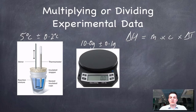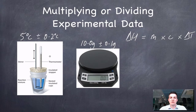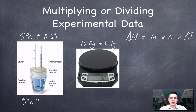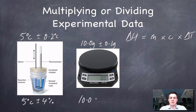If I want to multiply these two values together — mass and temperature change — I have to convert them into percentage errors first. The relative error for the temperature change is 4%, so it's 5 degrees centigrade plus or minus 4%. The relative error for the mass is 1%, so it's 10.0 grams plus or minus 1%.